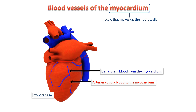As the muscles of the heart walls contract to pump blood around the body, they need a constant supply of oxygen. That is delivered by blood flowing through a network of arteries that course through the walls. These are the coronary arteries.